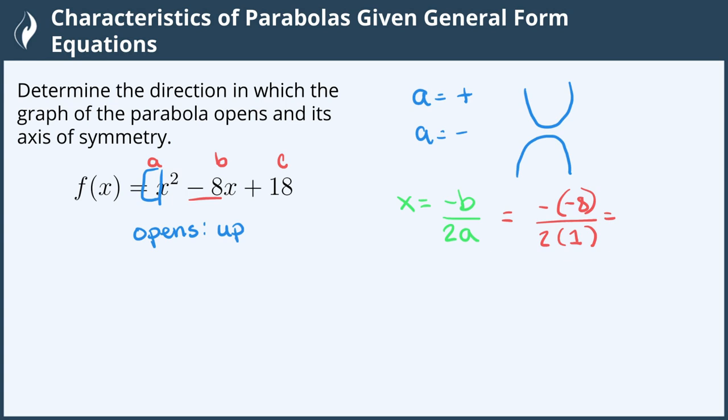Note how when I substituted the negative 8 in for b, it went only in for the b, and that negative on the outside still is on the outside. Using parentheses around the variable when we do substitution helps eliminate any of those negative mistakes that might occur.